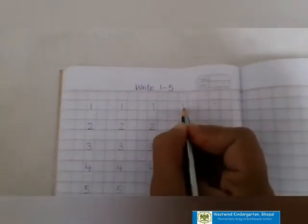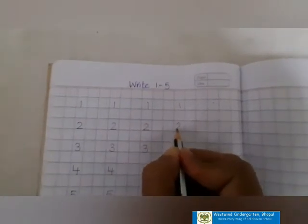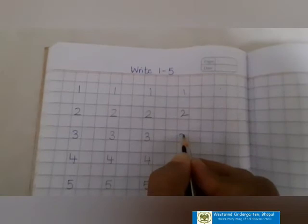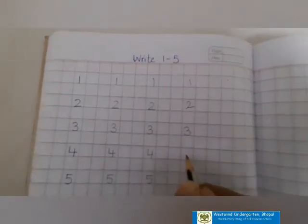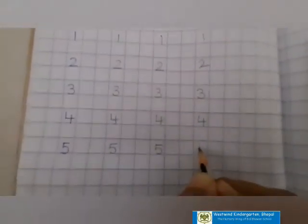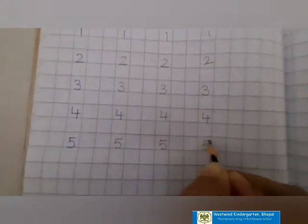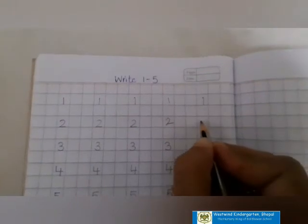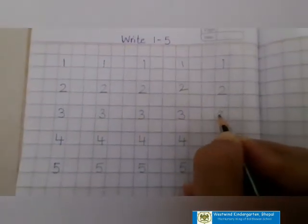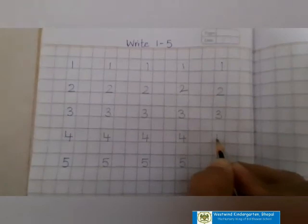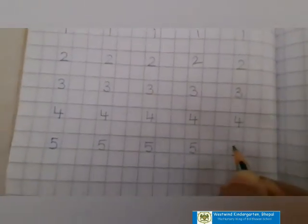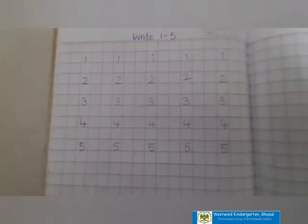Children, is this correct? 1. 2. 3. 4. 5. You have to finish this page like this. Thank you.